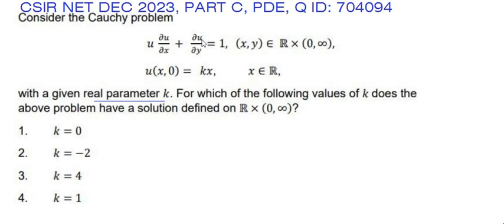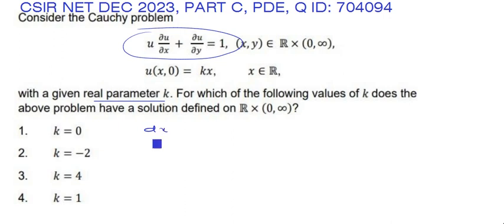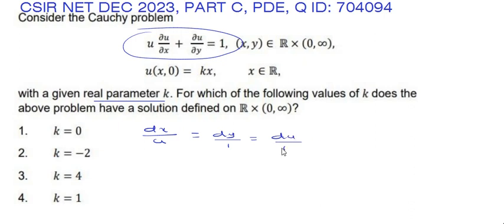This problem is related to the Cauchy problem. We need to find for what values of k does this Cauchy problem have a solution. The given Cauchy problem is: u · (∂u/∂x) + (∂u/∂y) = 1. We write the auxiliary equations corresponding to this: dx/u = dy/1 = du/1.